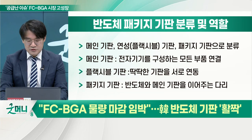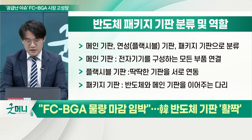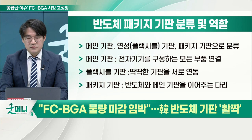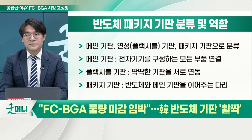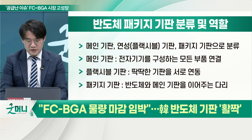메인 기판은 전자기기를 구성하는 모든 부품을 연결합니다. 플렉서블 기판은 유연하다고 해서 딱딱한 기판들을 서로 연결하는 다리 역할을 하게 되죠. 전자기기를 뜯어보면 초록색 딱딱한 기판과 그 사이를 연결하는 필름처럼 흐물거리는 부분을 보실 수 있는데, 그게 플렉서블 기판입니다.